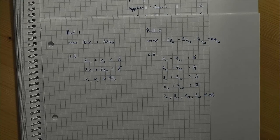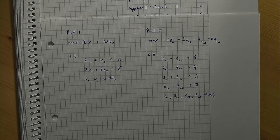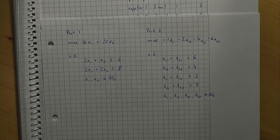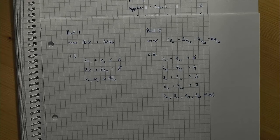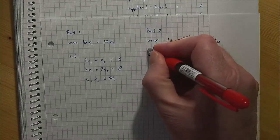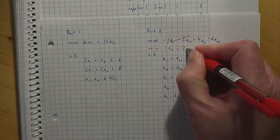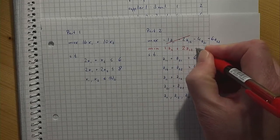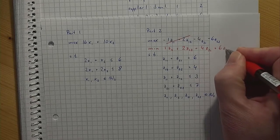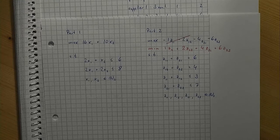Part 1 maximizes the revenue and part 2 minimizes the cost of material. Note that the objective function of the second part can be multiplied by minus 1 to transform the maximization problem into an equivalent minimization problem as shown in the previous video in model transformations.